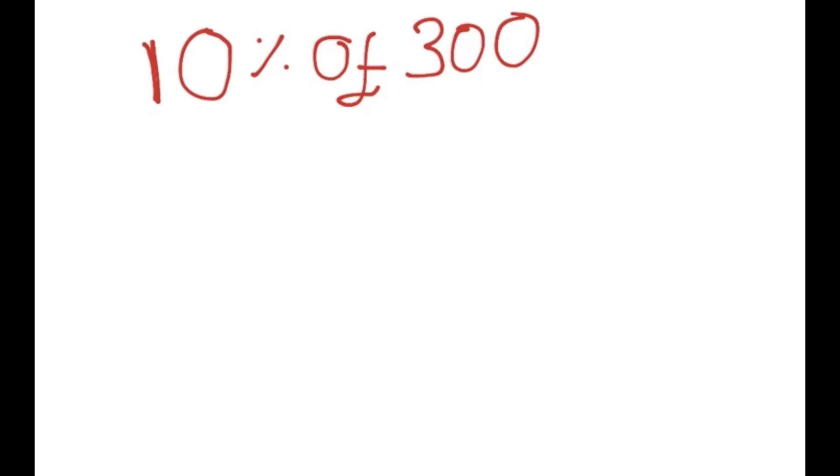For example, if you're given this situation where you have to find 10% of 300, what you have to remember is for any number, whenever you're finding 10% of it, you just remove the 0 at the end. So you just end up with 30.